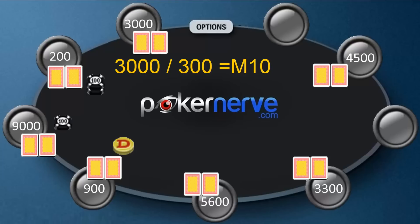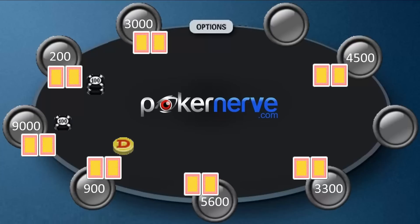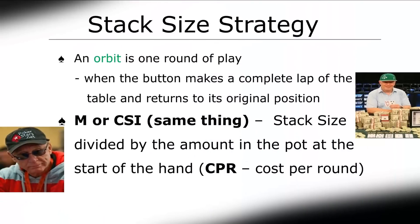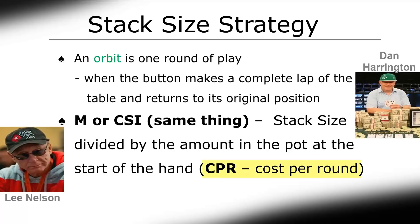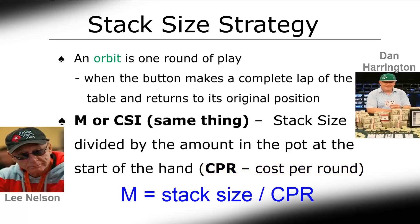Now we have a system that changes how we interpret the stack size to reflect the change in the blinds and antes — better than using BBs. Lee Nelson also realized this and recommended this system. However, rather than call it M, he refers to it as CSI, or the Chip Stack Index. So M and CSI are the same thing, and now when you hear these important terms, you'll know exactly what I'm talking about. Simply the stack size divided by the amount in the pot at the start of the hand. Lee refers to this amount as the cost per round, so M is stack size divided by the CPR.